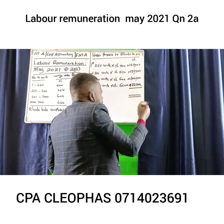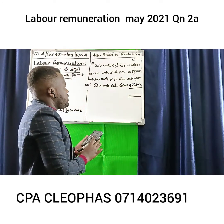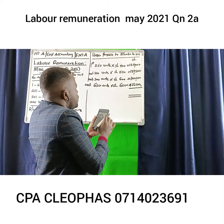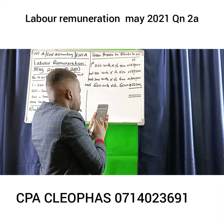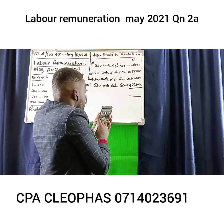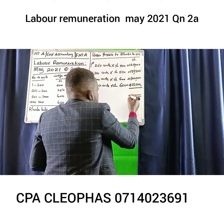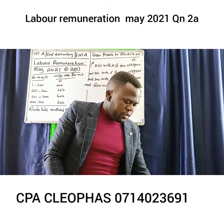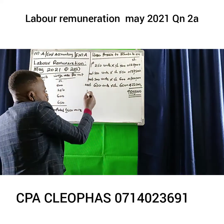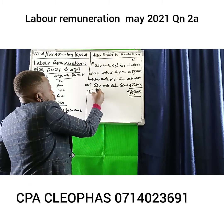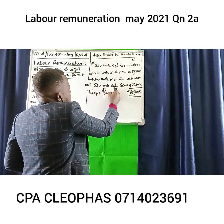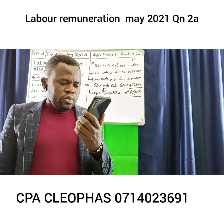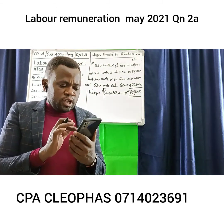Adding these amounts: 422,500 + 300,000 + 137,500 + 125,000 = Sh. 985,000. That is the total wages payable to Roda BD for the month of January 2021. That is what was expected in part A of that question.